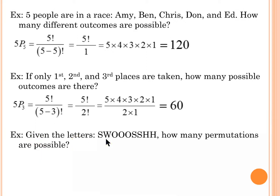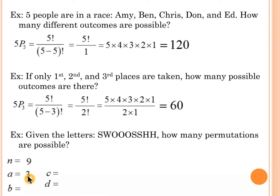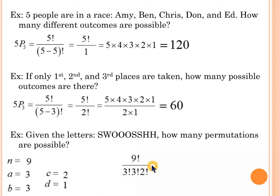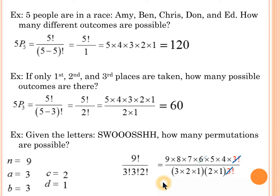Given the letters in the word 'swoosh,' how many permutations are possible? This is one of those word problems with repeating letters. We count nine total letters: three S's, three O's, and two H's. So it's 9 factorial divided by (3 factorial times 3 factorial times 2 factorial). After simplifying, the final answer is 5,040.